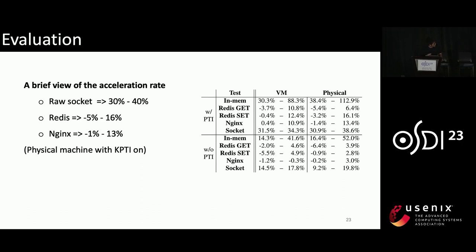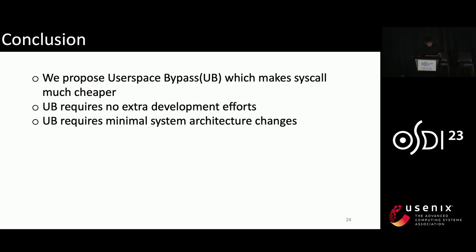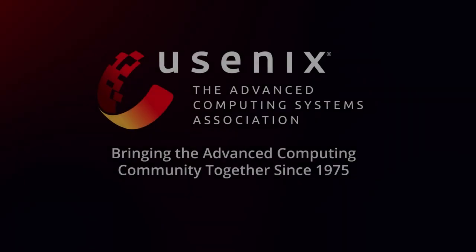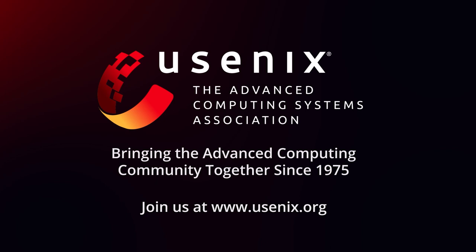In conclusion, we propose UB, which makes syscalls much cheaper, requires no development efforts, and requires minimal system architecture changes. You can find our code on GitHub. Thank you.